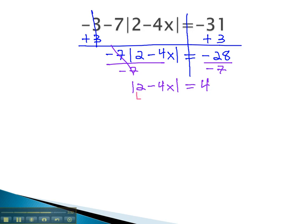Now, the absolute value is alone, we can consider both the positive and negative 4. 2 minus 4x equals positive 4, and 2 minus 4x equals negative 4.